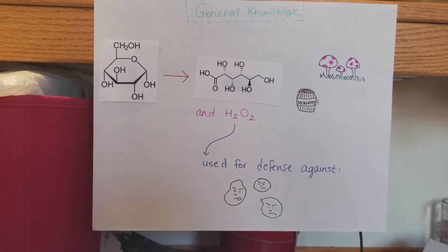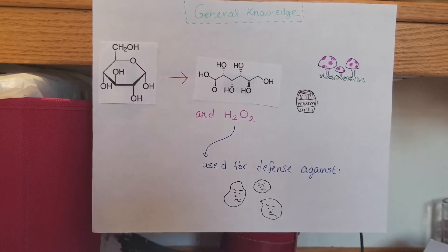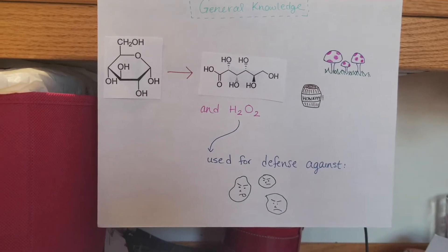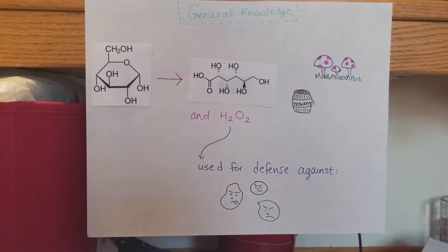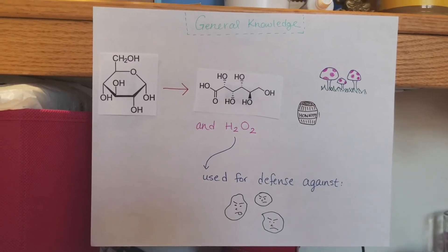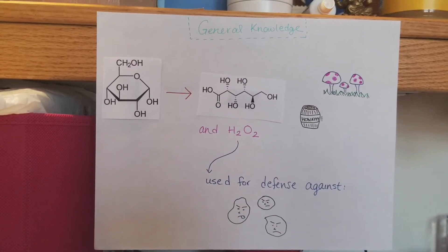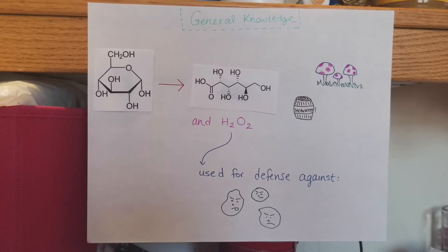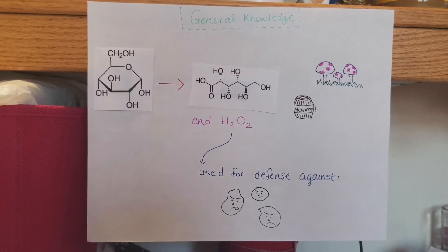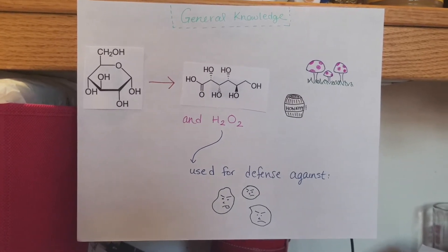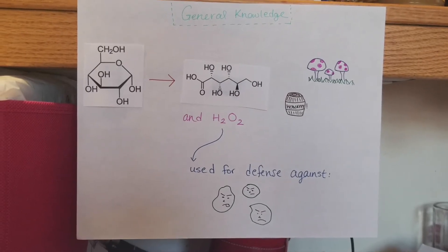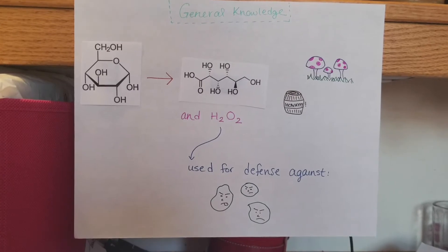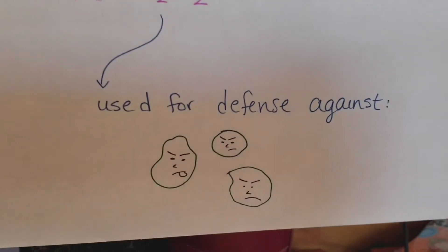Usually when we are talking about using oxygen as an electron acceptor we are talking about the electron transport chain and metabolism, but that's not what's happening here. In fact the point of the enzyme is not the reaction with glucose but the creation of hydrogen peroxide, which scientists think is used as a biological defense against bacteria. This is evidenced by the fact that it is found on the surface of fungi and in honey, both places where we don't want bacteria to be.